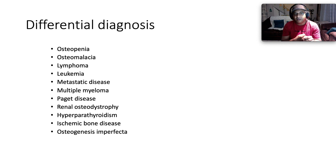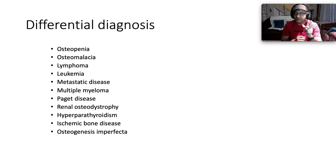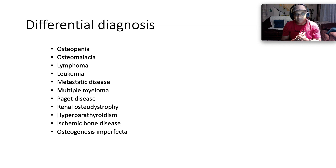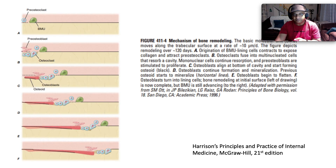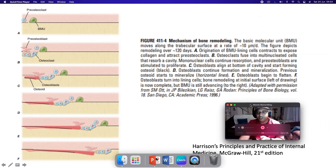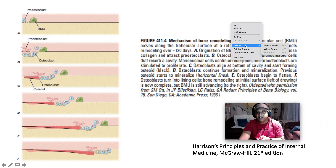The differential diagnosis for osteoporosis includes osteopenia, osteomalacia — which is a bone matrix mineralization problem — lymphoma, leukemia, metastatic disease, multiple myeloma, Paget's disease, renal osteodystrophy, hyperparathyroidism, ischemic bone disease, and osteogenesis imperfecta.